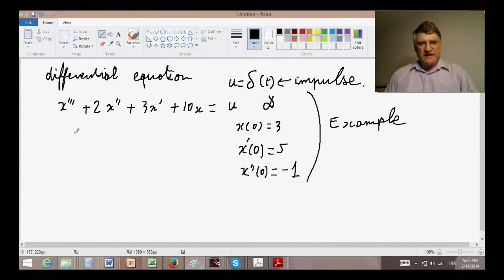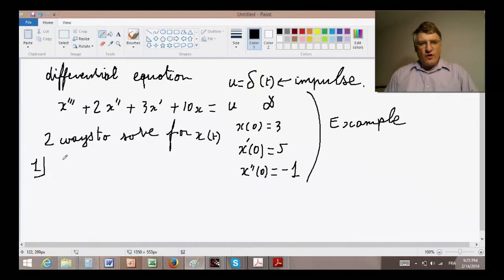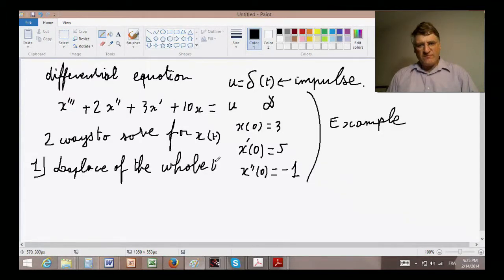Say that u, again to make things specific, will be delta of t, okay, that is an impulse. Then, as I said, there are two ways to solve for x of t. The first way is to take the whole Laplace thing.